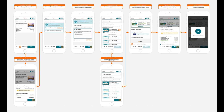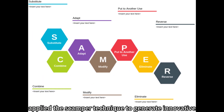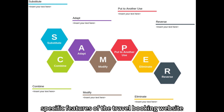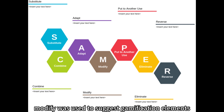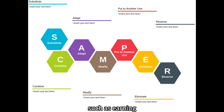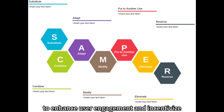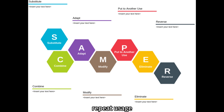The one-page checkout displays all relevant information including pricing details, booking summary, and payment options in a clear and concise manner. SCAMPER: applied the SCAMPER technique to generate innovative ideas for improving specific features of the travel booking website. For instance, 'Modify' was used to suggest gamification elements such as earning loyalty points or unlocking badges for completing bookings, to enhance user engagement and incentivize repeat usage.